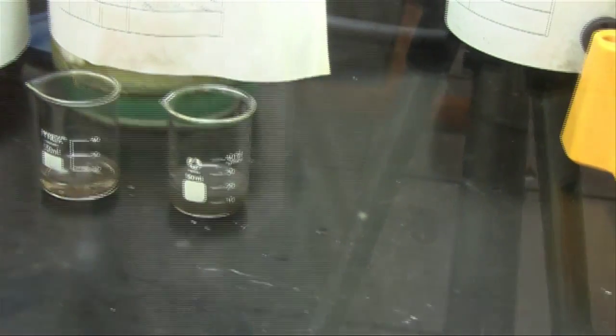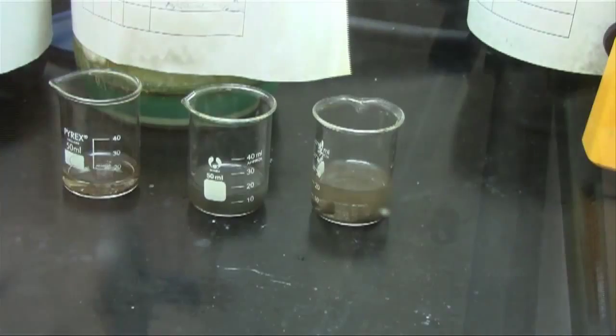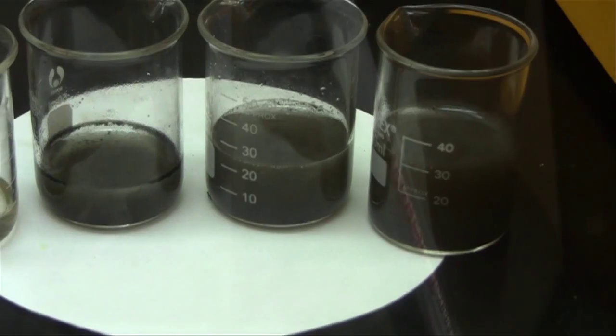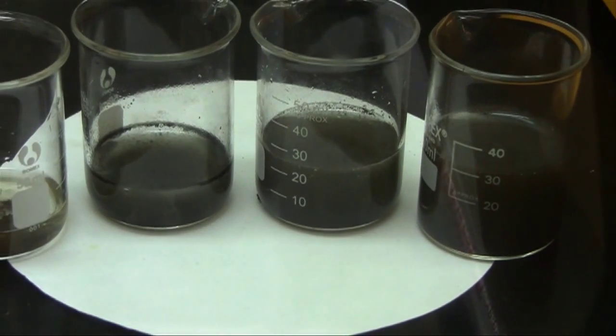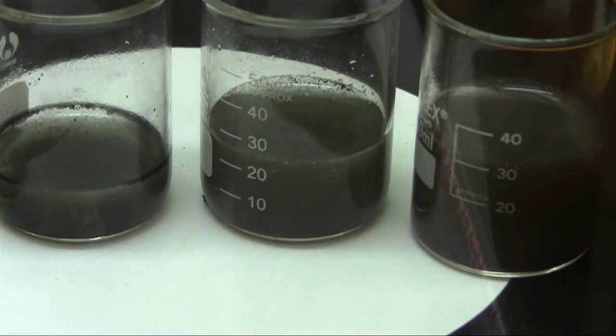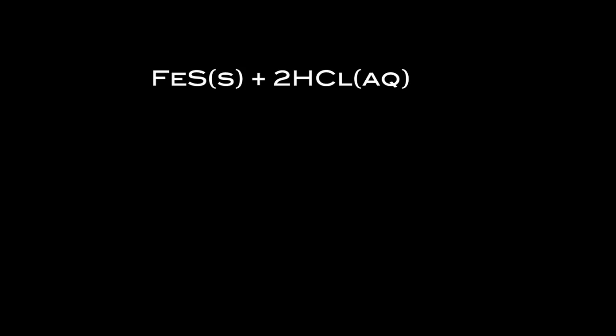Here we create the four different concentrations of iron 2 chloride. The equation for this reaction is shown here. One mole of solid iron sulfide plus two moles of hydrochloric acid results in one mole of aqueous iron 2 chloride and the poisonous gas hydrogen sulfide.